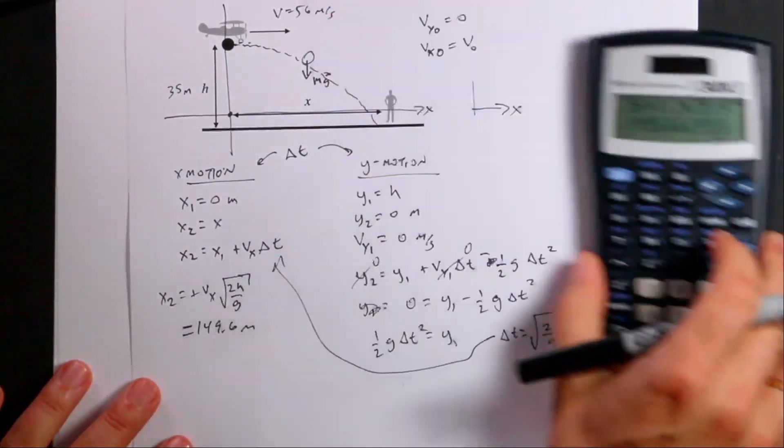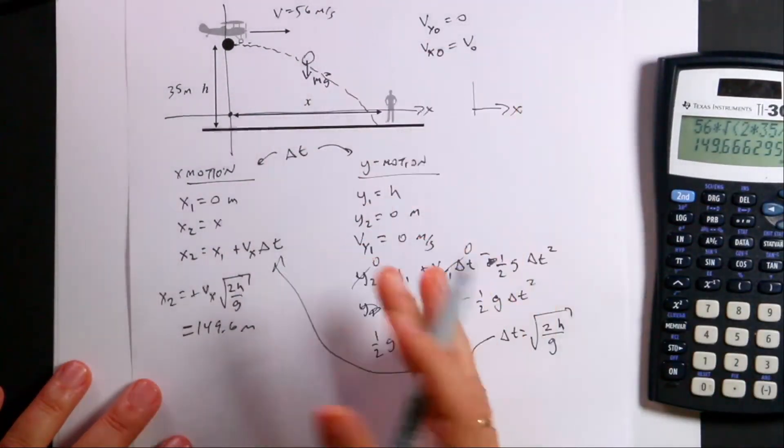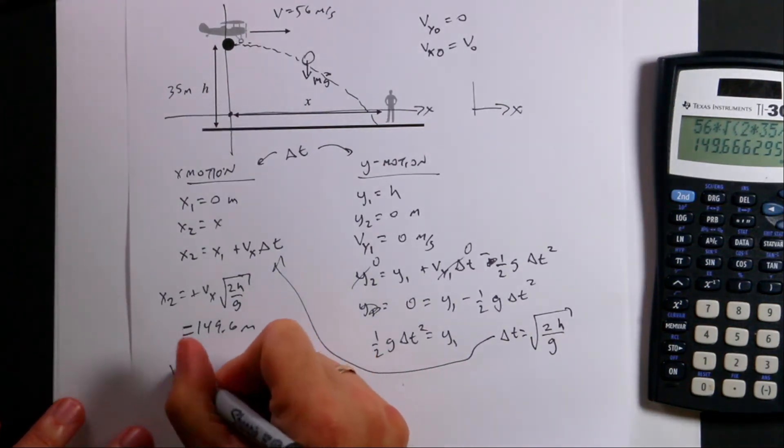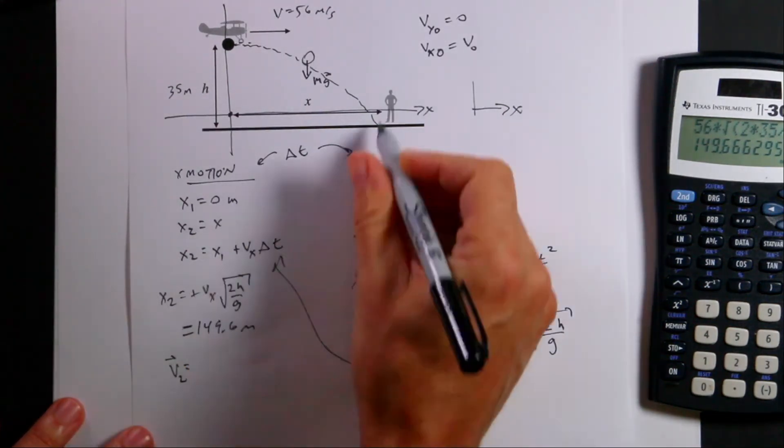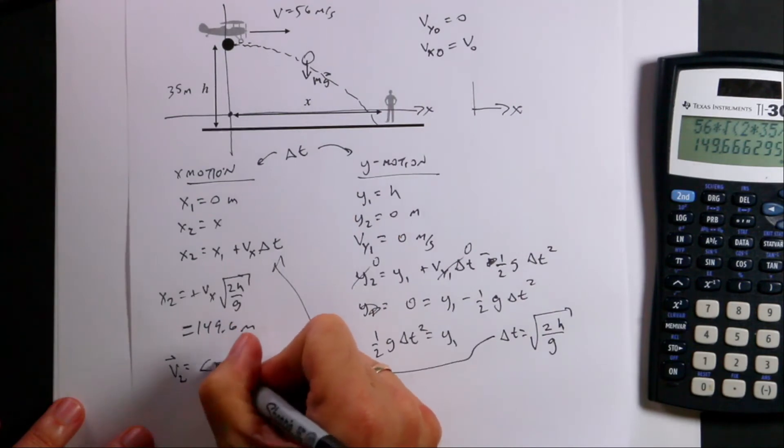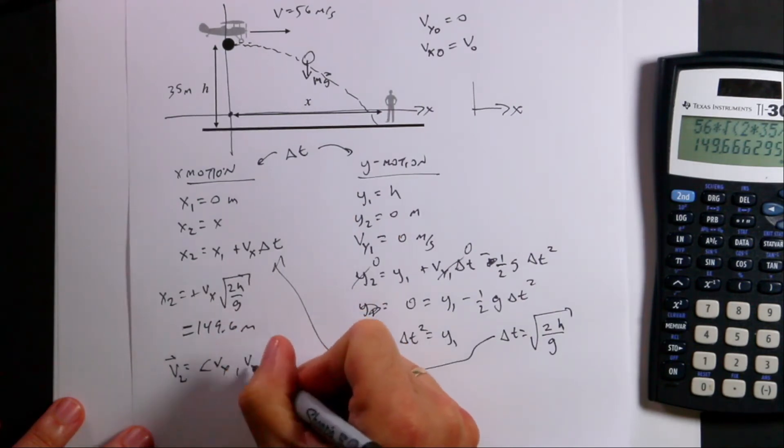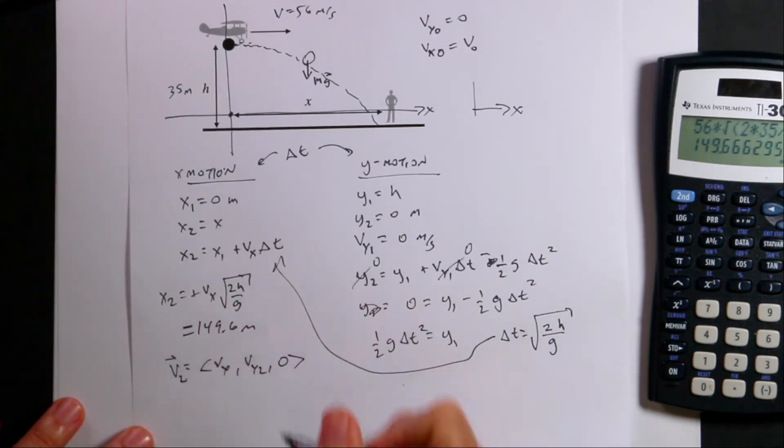So that's how far before the drop point you have to get. Now, I actually had another question that says, what was the final velocity? So V2, right before it hits the ground, is going to be Vx, Vy2, 0. Right? It's a vector. And I already know the x component.